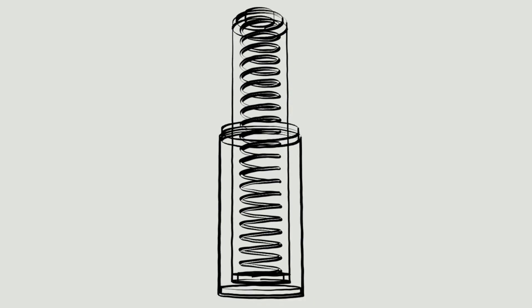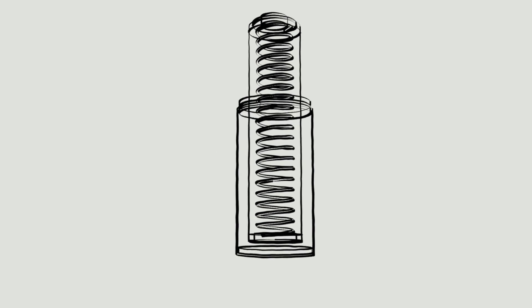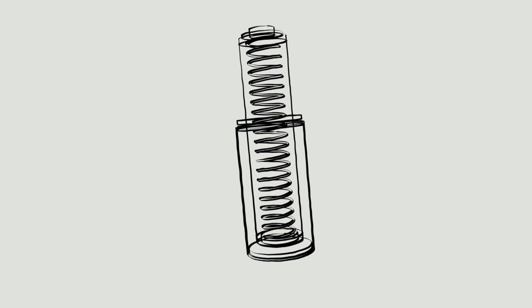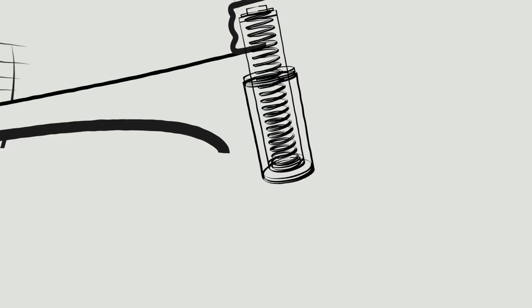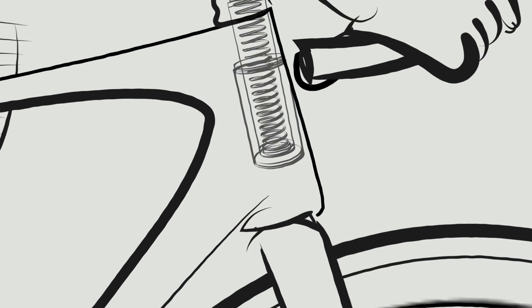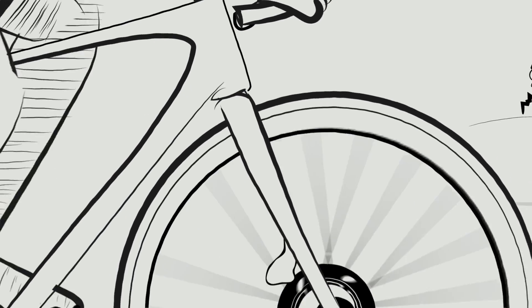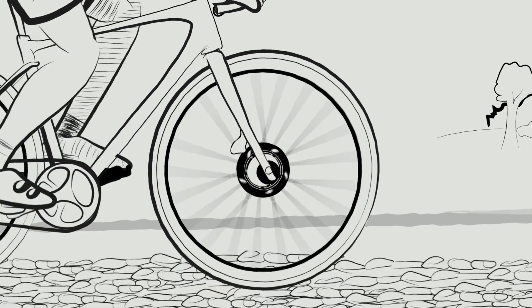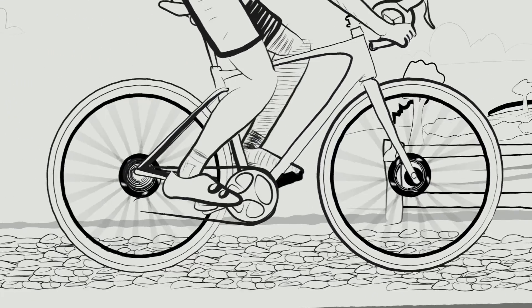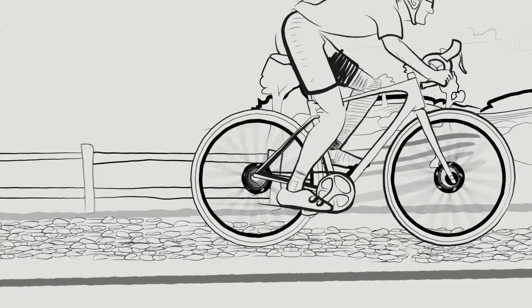It's a lightweight suspension solution that removes the harshness of the road. Everything from the cobbles of Roubaix to the chip seal of your favorite local ride, these vibrations wear you out and eat your speed. But by adding 20 millimeters of travel, the Future Shock isolates you from the surface and smooths out your ride so you get more speed over every kind of road surface.